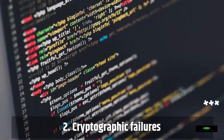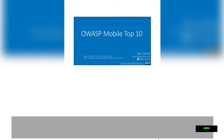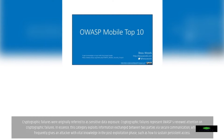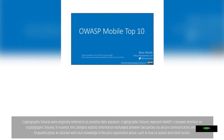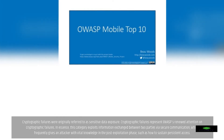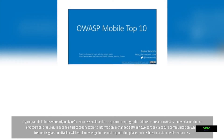Cryptographic failures were originally referred to as sensitive data exposure. This category represents OWASP's renewed attention on cryptographic failures. In essence, it exploits information exchanged between two parties via secure communication, which frequently gives an attacker vital knowledge in the post-exploitation phase, such as how to sustain persistent access.